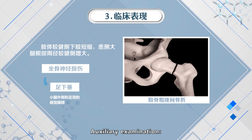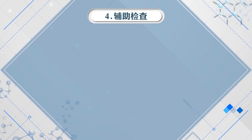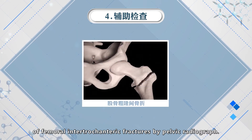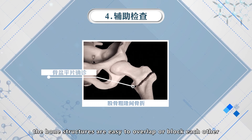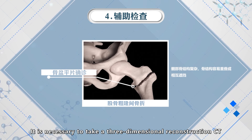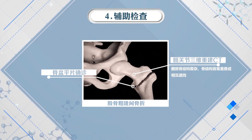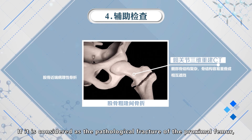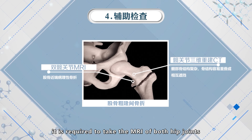If accompanied by sciatic nerve injury, there will be foot drop and sensory disturbances on the lateral crus and in the instep. For auxiliary examination, we usually need a pelvic radiograph for definitive diagnosis. However, bone structures are easy to overlap or block each other due to the complex hip bone structures. It is necessary to take a three-dimensional reconstruction CT of both hip joints to understand the specific type of fracture.